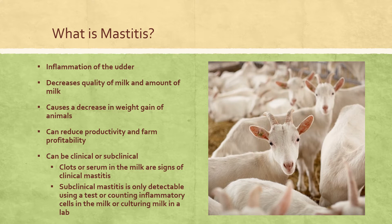Regardless of milk yield, mastitis is an issue because it can decrease the quality and amount of milk, and it can also cause a decrease in weight gain of the animals, thereby reducing productivity and farm profitability. Mastitis can be clinical or subclinical. Clots or serum in the milk are signs of clinical mastitis, while subclinical mastitis is only detectable using a test, counting inflammatory cells in the milk, or culturing milk in a lab.